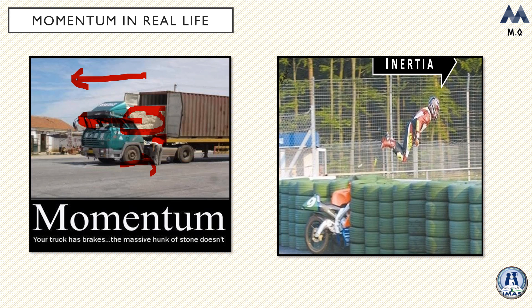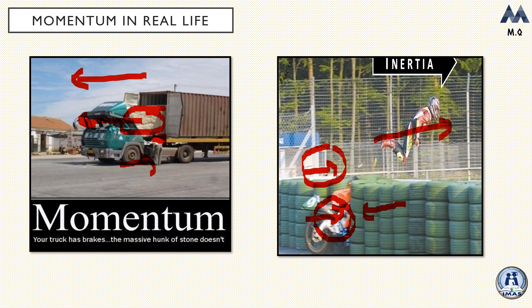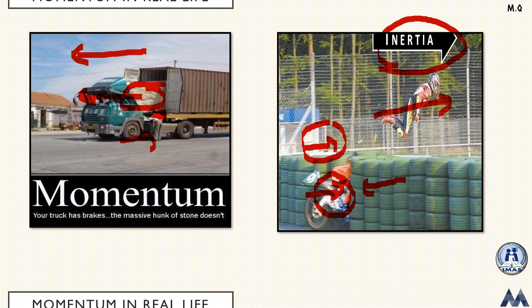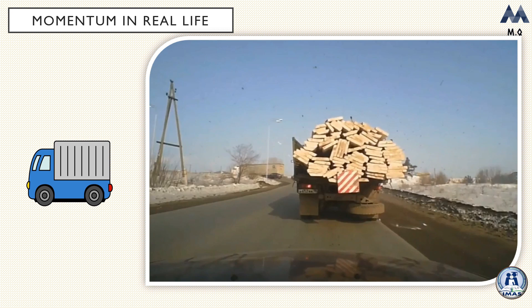Similarly, in the second picture, both the bike and the biker had the same momentum. However, the bike received a force that changed its momentum. The biker did not receive a similar force, so he continued traveling with the same momentum — he has inertia, a resistance to changing his momentum.